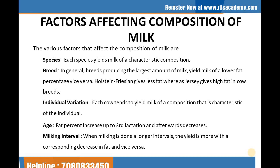The next topic is the factors affecting the composition of milk. Milk differs widely in composition. All milk contains the same kinds of constituents but in varying amounts. Milk fat shows the greatest daily variation, then proteins, followed by ash and lactose. The various factors that affect the composition of milk: the first one is species. Each species yields milk of characteristic composition, with different types of species having different compositions in their milk. The next one is breed. In general, breeds producing the largest amount of milk yield milk of a lower fat percent, and vice versa. Holstein Friesian gives less fat whereas Jersey gives high fat in cow breeds.